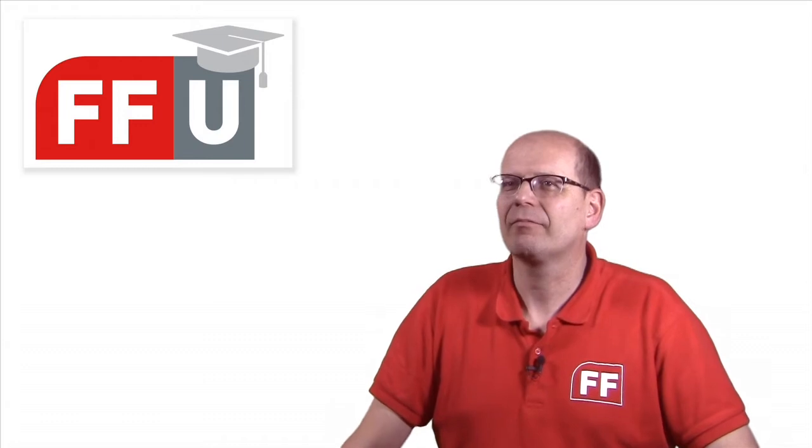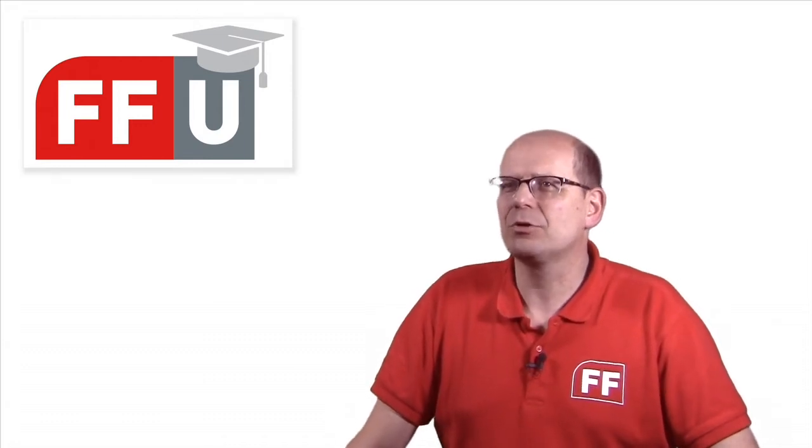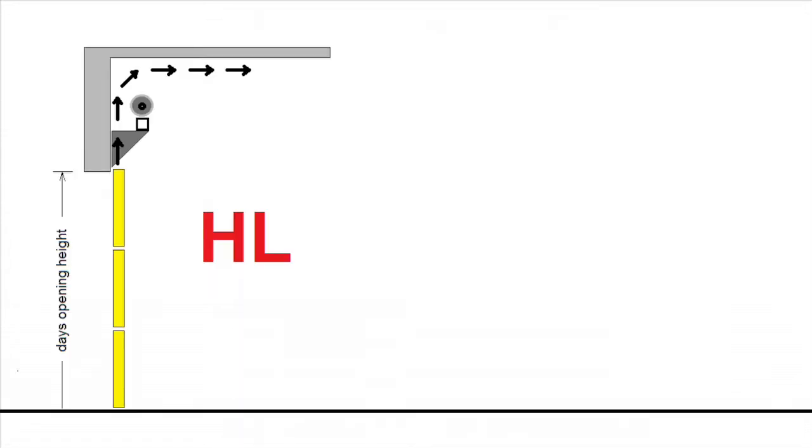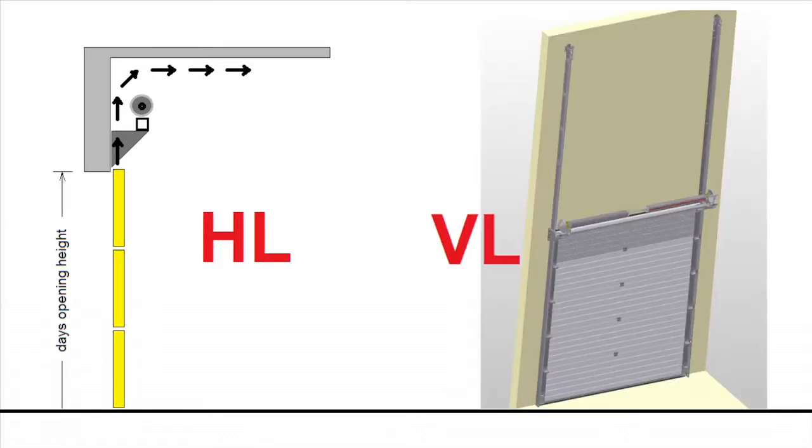Springs on beams, what is that exactly? It's an industrial system solution where the torsion springs and shafts are mounted on a steel beam, around 1 meter above the door's opening, and the door blade runs behind the beam, applied on high lift and vertical lift systems.